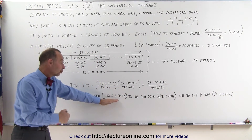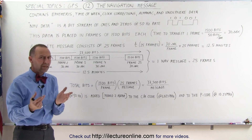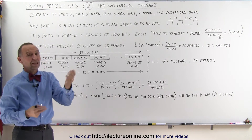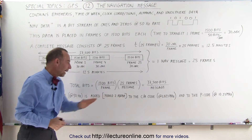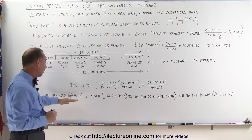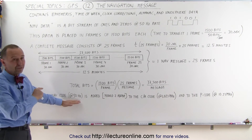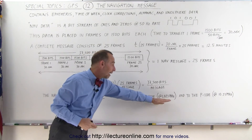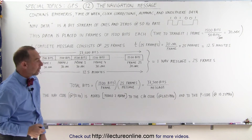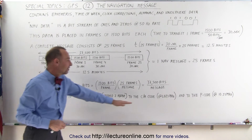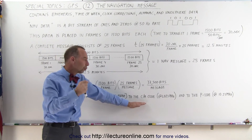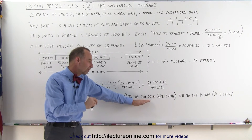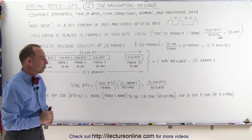We do that via what we call the modulo-2 adder. That means that if they're both high, it goes to low. If one of the two is high, it goes to high. If both are low, it stays low. That's what we mean by the modulo-2 adder. At 50 hertz, there's only one bit every 20 milliseconds, and during that same 20 milliseconds you will have about 20,000 bits of the CA code — roughly 20,000 bits of the CA code for every one bit of the navigation message.